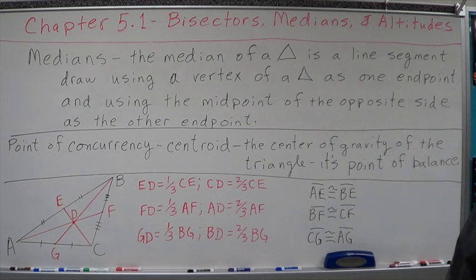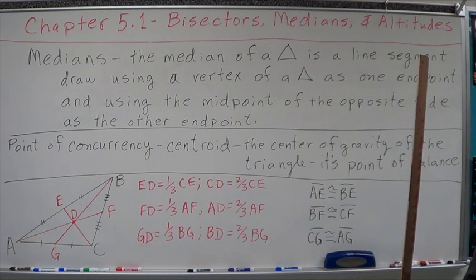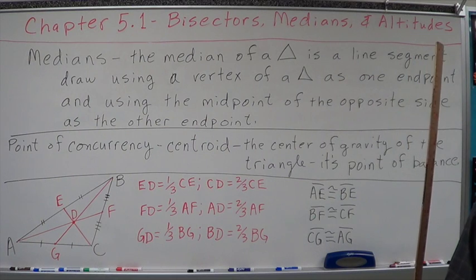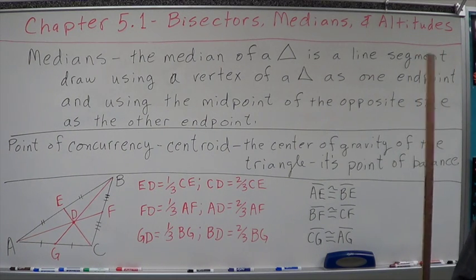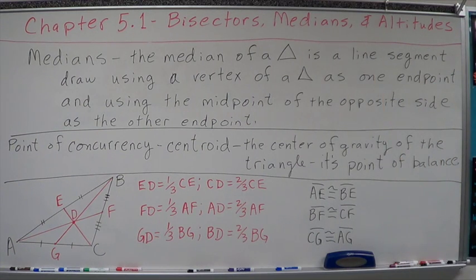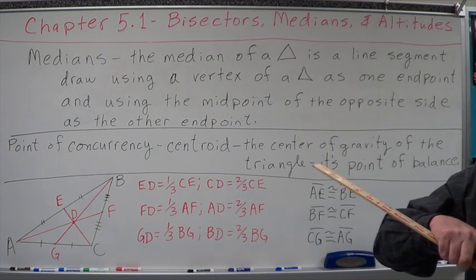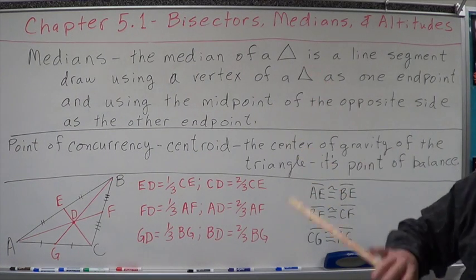Perpendicular bisectors - how do I draw them? Perpendicular bisector of sides of a triangle. Find the midpoint of each side, draw a perpendicular bisector. Angle bisector - touch the vertex, bisect the angle.